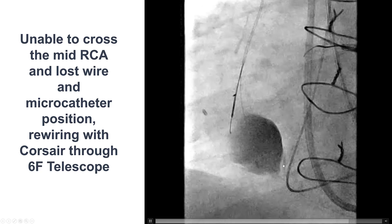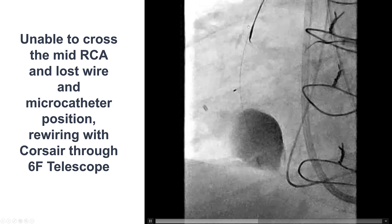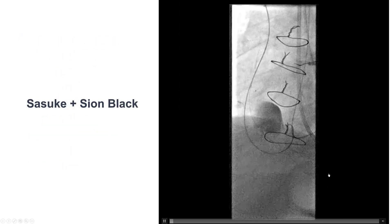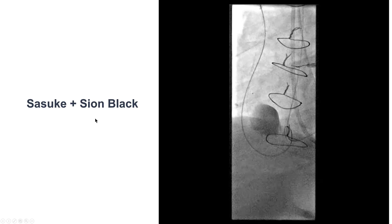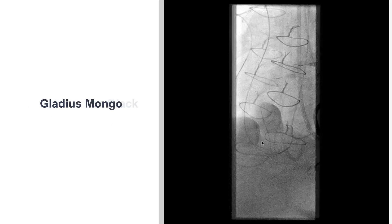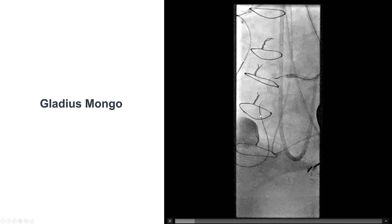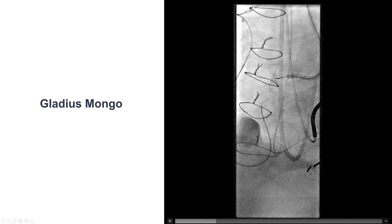We did have difficulty advancing equipment, and we eventually lost everything. So we had to start again, re-engaging the vein graft and then advancing guide wires retrograde. Once again, dual microcatheter, dual-lumen microcatheter along with a Gion Black. And then again, now we have the microcatheter to the mid-right coronary artery, and we're trying to make the two wires, the antegrade and the retrograde, get into the same spot.